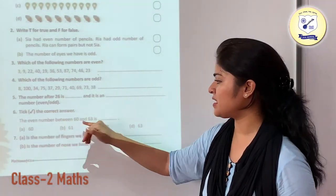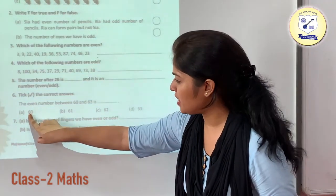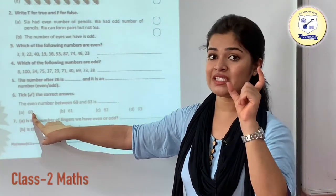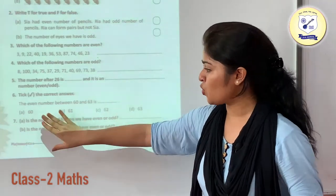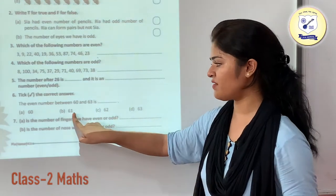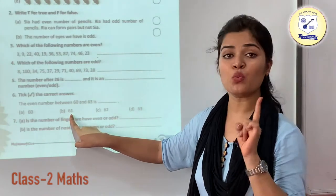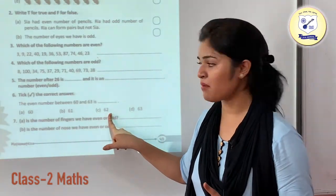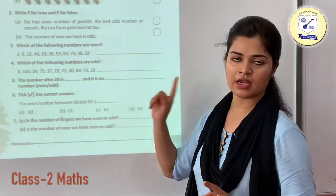The even number between 60 and 63: 60 is even but it does not come between 60 and 63. 61 comes between 60 and 63, but it is not your even number since it has 1 at its ones place. 62 — yes, it is an even number and yes, it comes between these two numbers. So 62 is the answer.